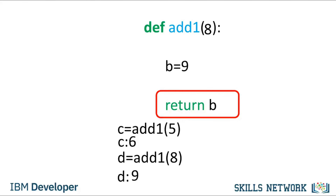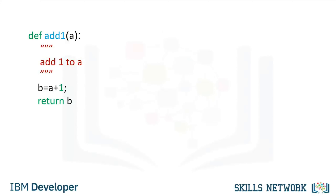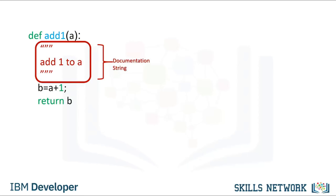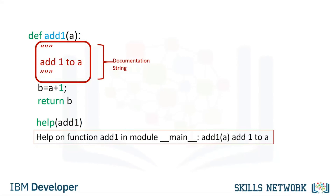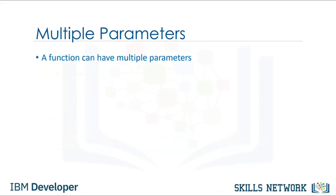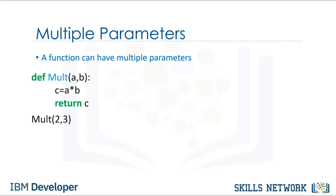A function can have multiple parameters. The function mult multiplies two numbers — it finds their product. If we pass the integers 2 and 3, the result is a new integer. If we pass the integer 10 and the float 3.14, the result is a float 31.4. If we pass the integer 2 and the string Michael Jackson, the string Michael Jackson is repeated two times, because the multiplication symbol can also mean repeat a sequence.